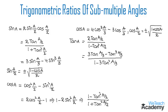Now let us discuss the formula for the trigonometric ratio of submultiple angle A/2. That is, tan(A/2) will be equal to plus or minus under root of (1 minus cos A) divided by (1 plus cos A).